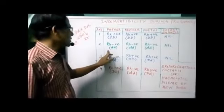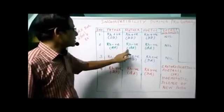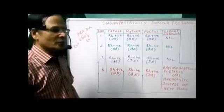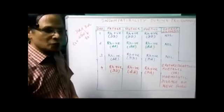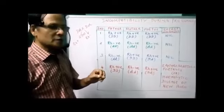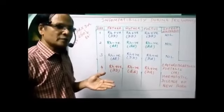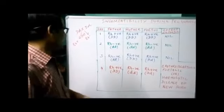The next case: both father and mother are Rh negative. Now the fetus is also Rh negative. Here too, nothing would happen to the fetus. The mother can have any number of pregnancies.